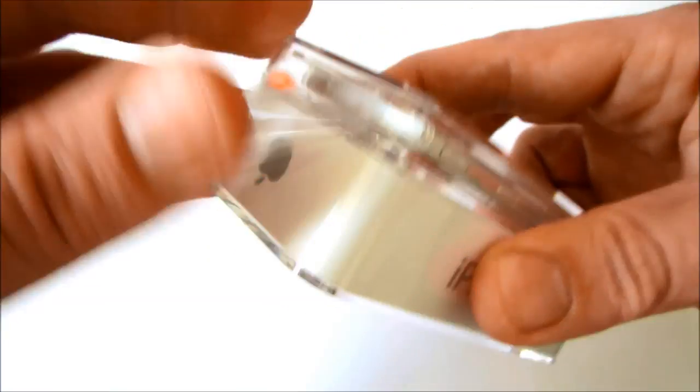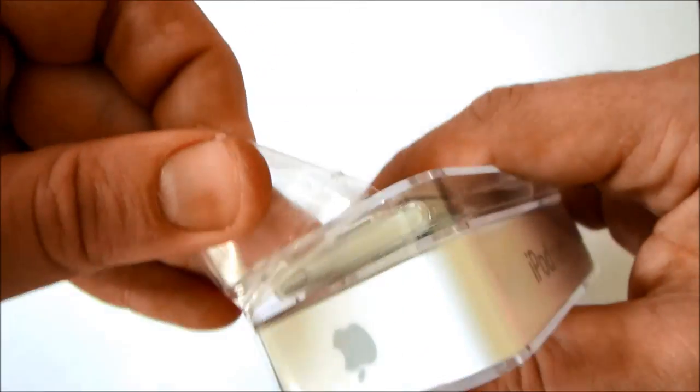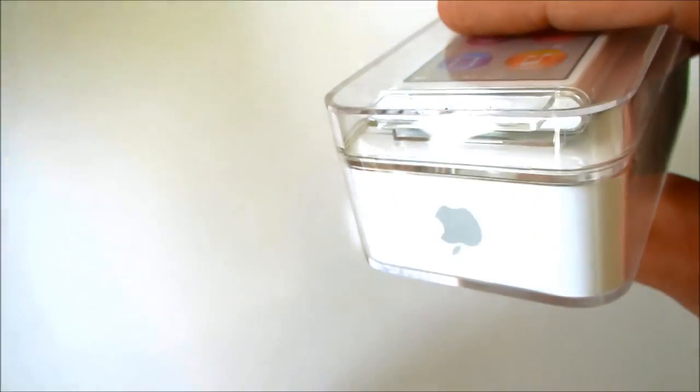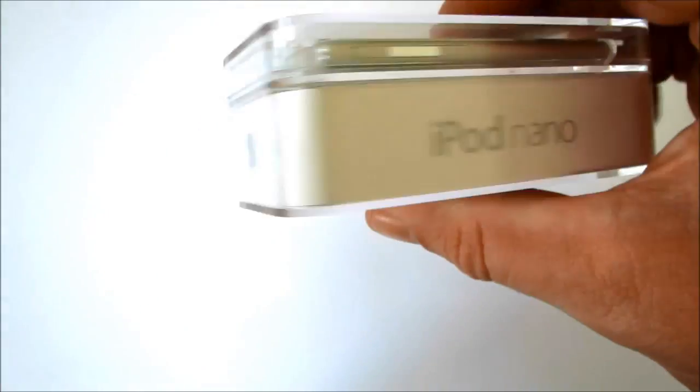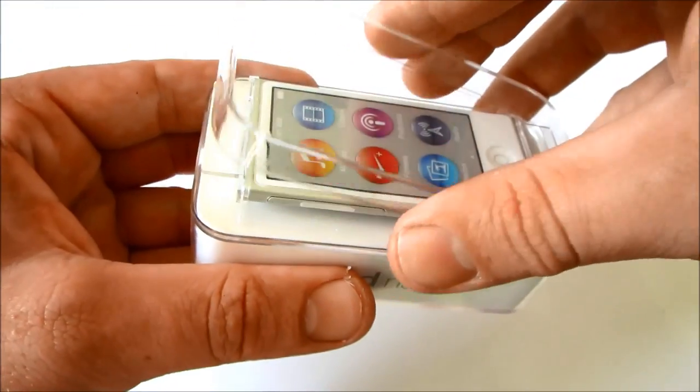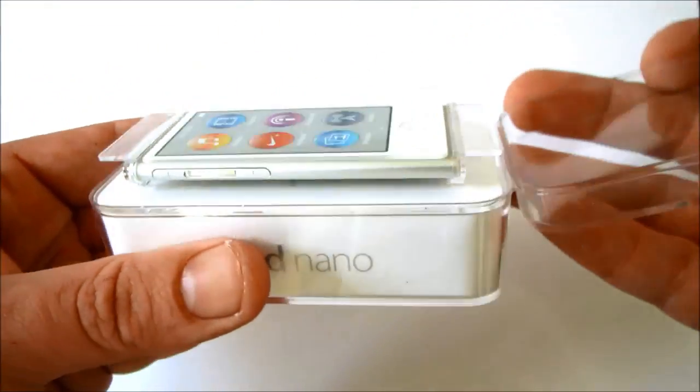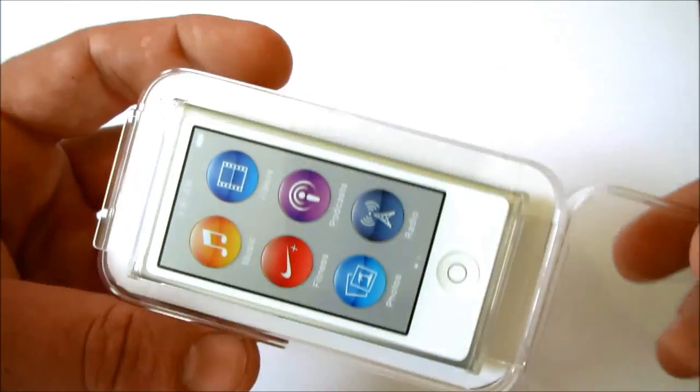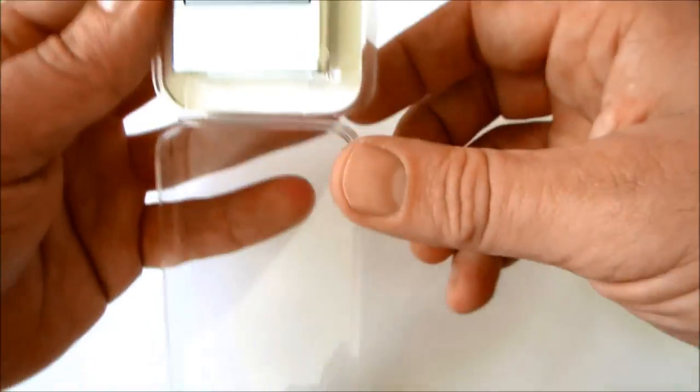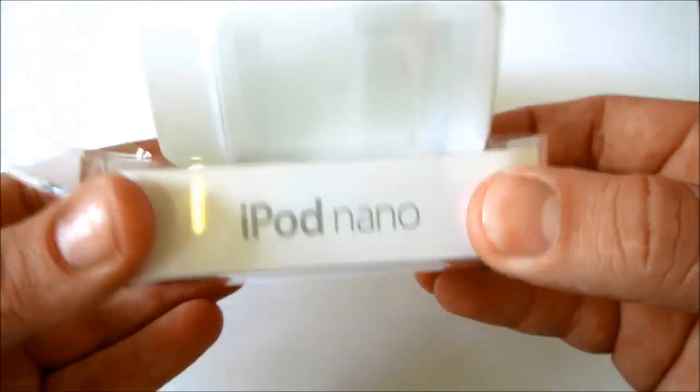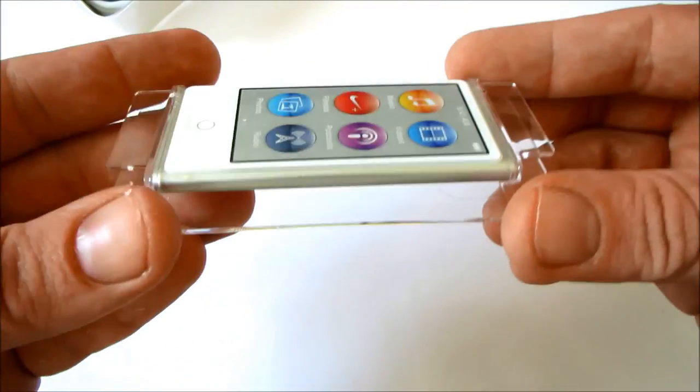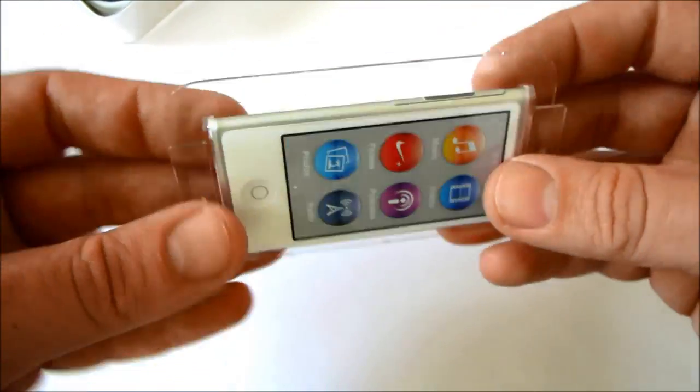Say you're listening to a song you love and you want to stay in the mood, just tap Genius. It finds other songs on iPod Nano that go great together and makes a Genius playlist for you. For more song combinations you wouldn't have thought of yourself, you can create Genius mixes in iTunes and sync the ones you like to iPod Nano. Then tap Genius mixes and rediscover songs you haven't heard for a while or find music you forgot you even had.